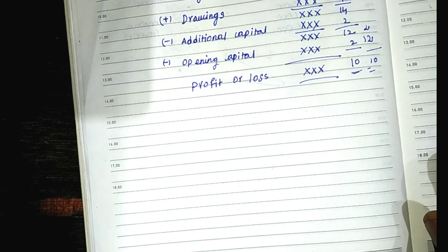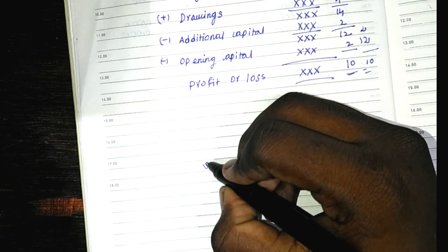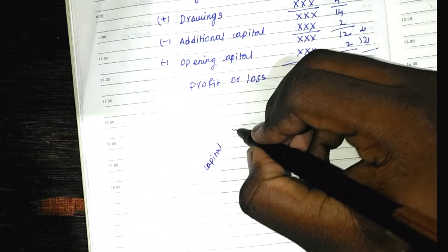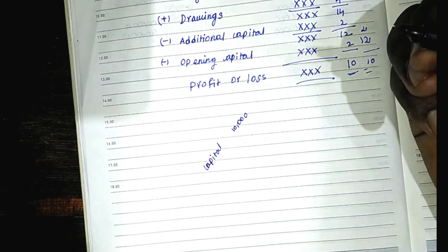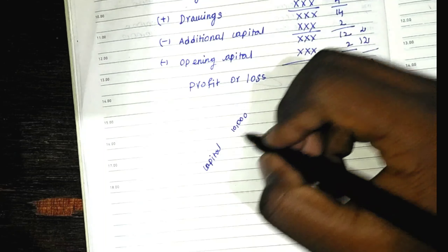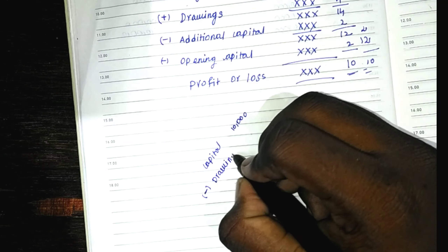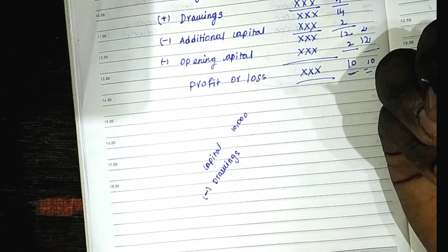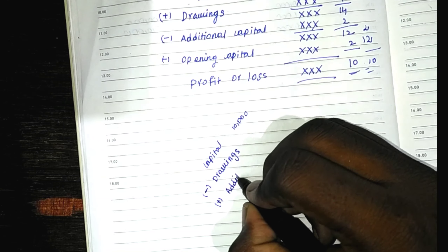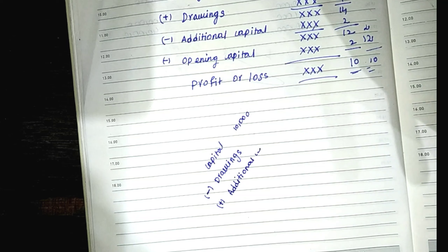At the level standard, in the balance sheet on the liability side, we have capital — for example, $10,000. At the next level standard, we apply the balance sheet with capital, drawings, and additional capital.